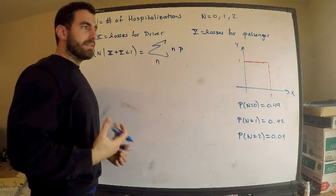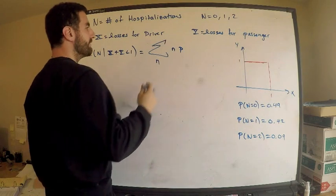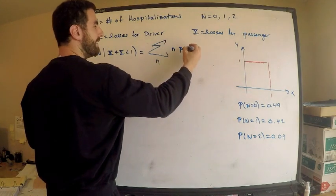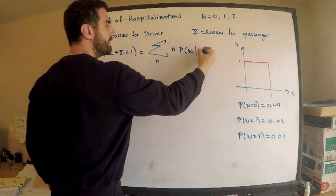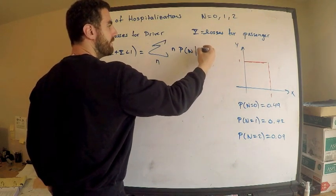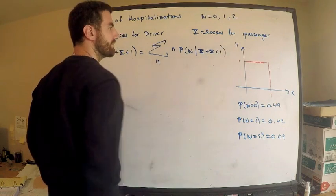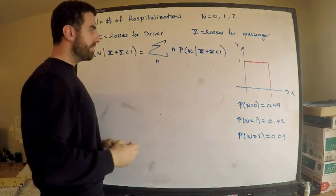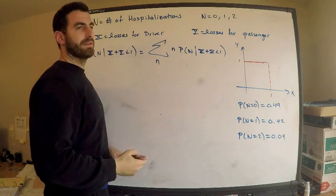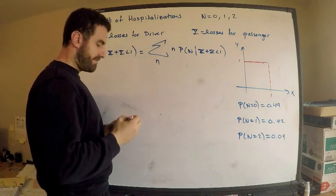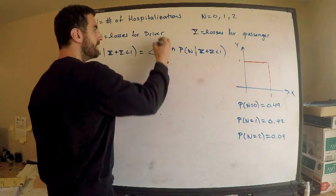Since it's a mixture of random variables — continuous and discrete — I'll write it this way: the probability that N equals n, given the total loss is less than 1. This is the definition. And I'll figure out what I want to sum over — it's obvious — we're summing over N equals 0 to 2.